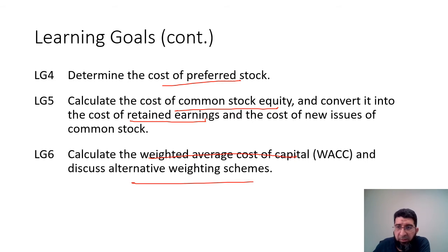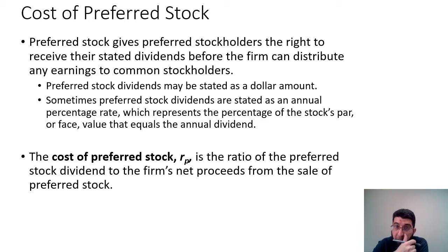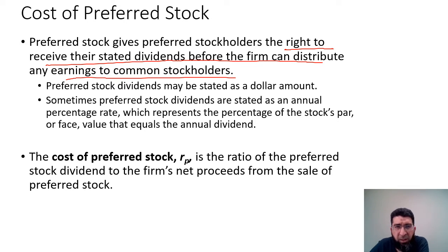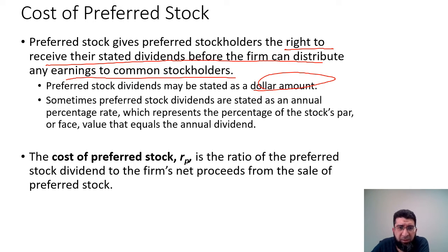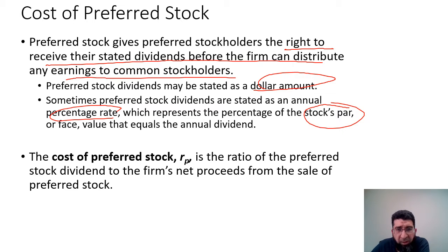Preferred stock gives preferred stockholders the right to receive their stated dividends before the firm can distribute any earnings to common stockholders. It's a hybrid security between debt and equity — it has certain characteristics that attract towards the debt side and others towards the equity side. Preferred stock dividends may be stated as a dollar amount or as a percentage rate with respect to the stock's par or face value, and equals the annual dividend.